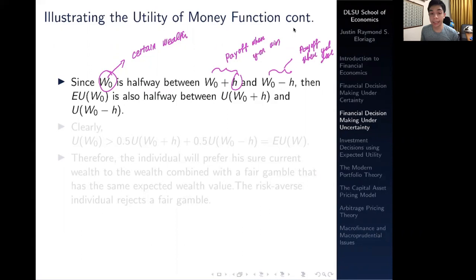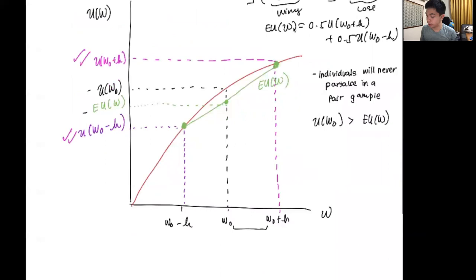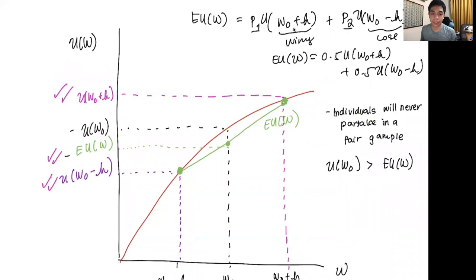What you'll notice is that the expected utility of the certain wealth is also halfway between the utility if you evaluate the utility function at W₀ + H and if you evaluate the utility function at W₀ - H. So let's go back and see that. Notice we have W₀ - H here, then we have an upper bound which is W₀ + H, and then we have our expected utility of wealth which is somewhere in between these two bounds.